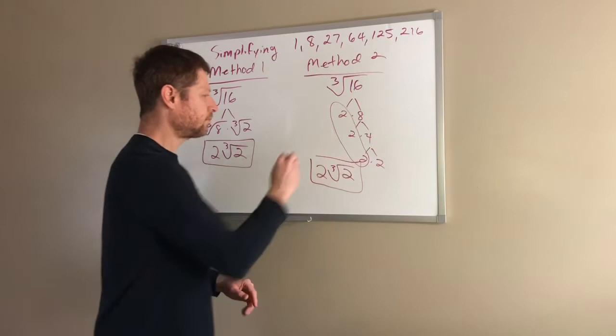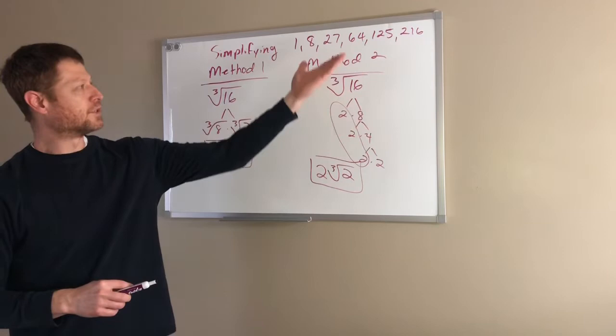So again, method number 1, method number 2. This is very beneficial for numbers that are very large if you're having a hard time finding perfect cubes that go inside, but again you can always use your calculator as well.